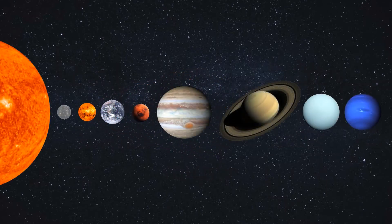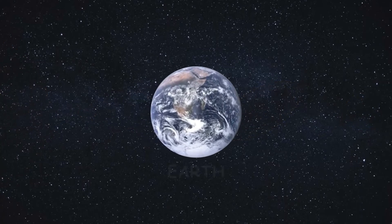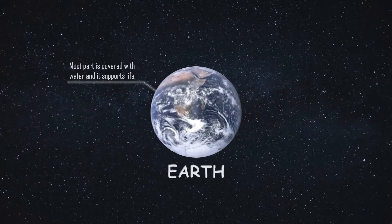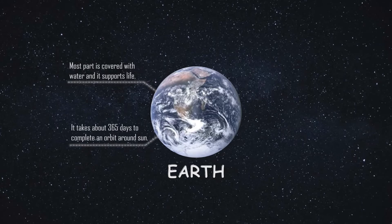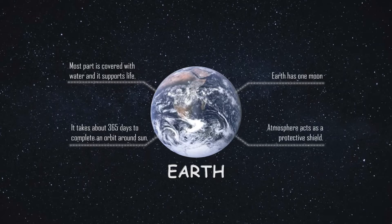The third planet is our planet Earth. Most of Earth is covered with water and it supports life. It takes about 365 days to complete an orbit around the sun. Earth has one moon, and its atmosphere acts as a protective shield, protecting Earth from meteoroids and other objects which almost burn up before reaching the surface. Earth is a special planet because it supports life.